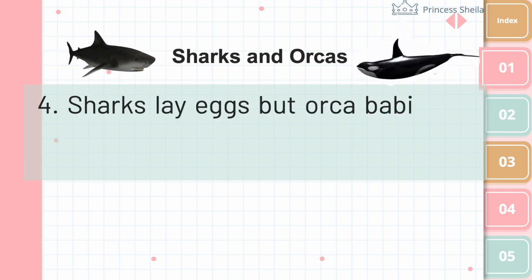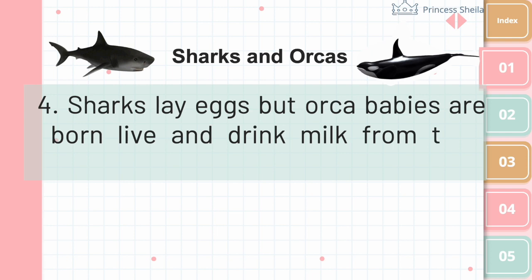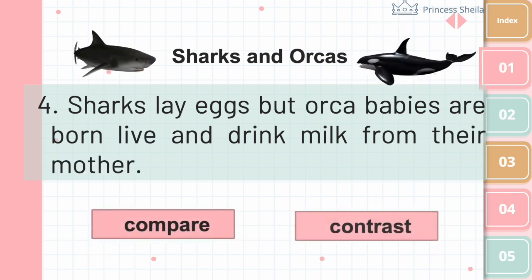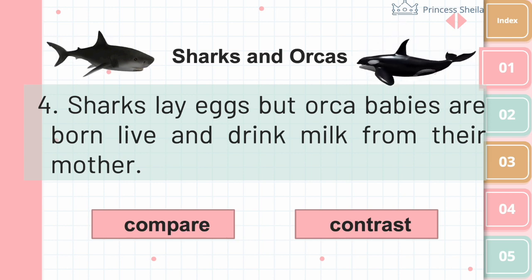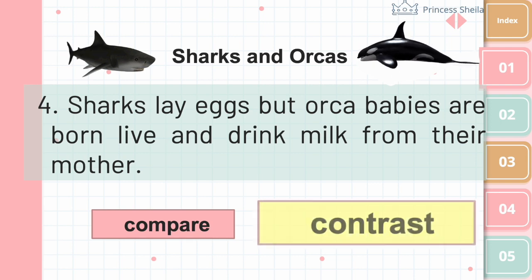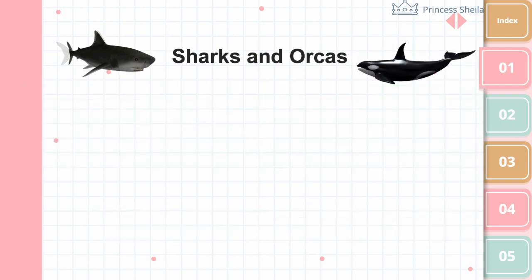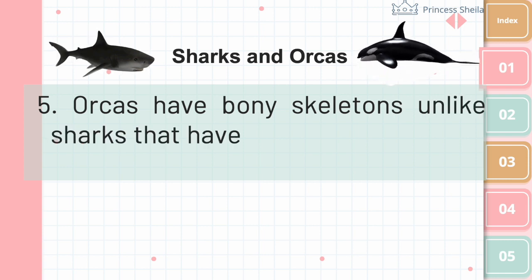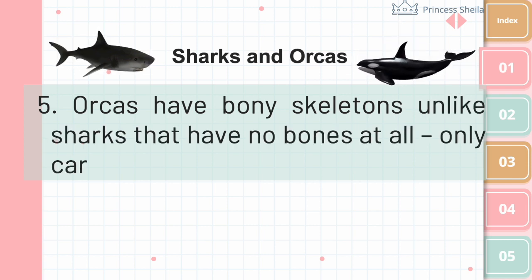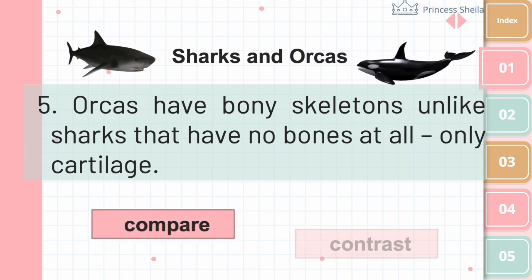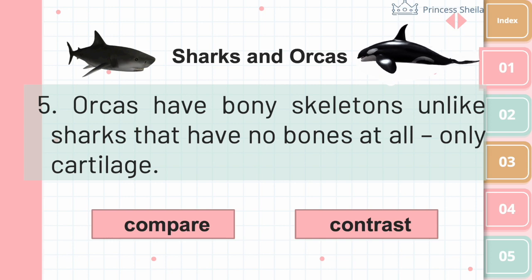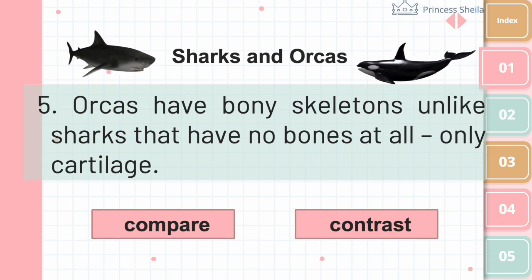Four: Sharks lay eggs, but orca babies are born live and drink milk from their mother. — Contrast. Five: Orcas have bony skeletons, unlike sharks that have no bones at all, only cartilage. — Contrast.